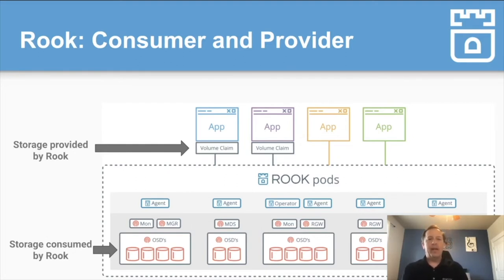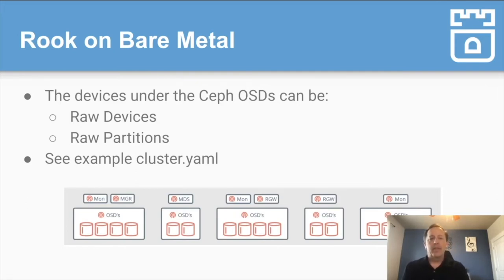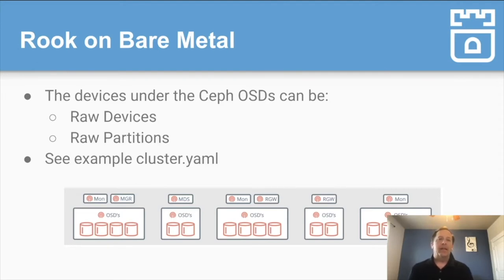Once Rook is configured at this basic layer, no matter what environment you're running in, at the top layer the storage looks the same to your applications. On bare metal, if you're running in your own data center, you're going to have raw devices, maybe partitions on those nodes. Your OSDs are backed by that raw storage — no file systems are needed, just plain raw devices or partitions — and Ceph knows how to consume those raw block devices. In the example cluster.yaml, if you look in the Rook examples folder on our GitHub, you'll see settings like use all available raw devices, or devices that match a certain filter, or devices by name. Fundamentally, you're still just consuming raw devices or partitions.